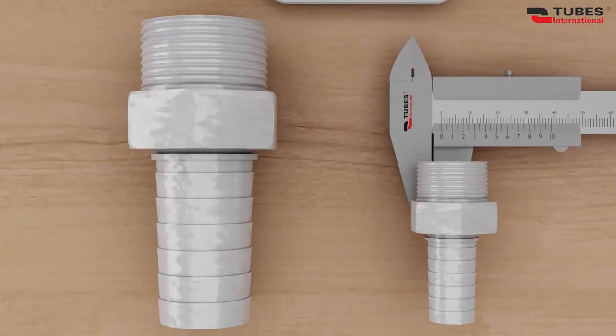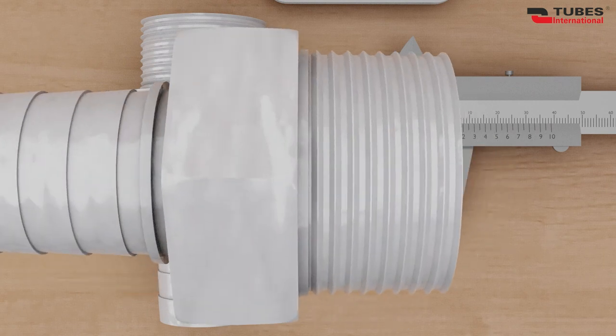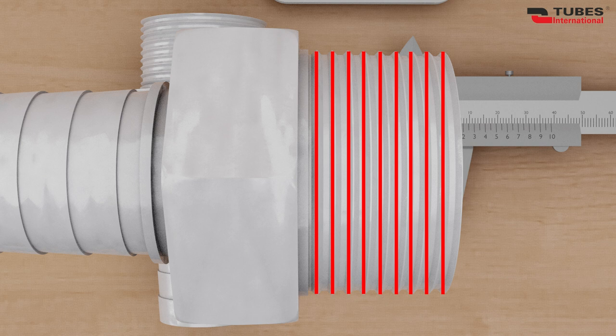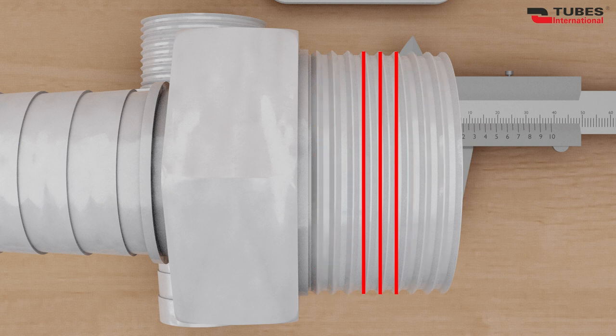So how do we measure a thread? Let's start by measuring the diameter. For a cylindrical thread, we can measure it anywhere, as the diameter remains constant. Taper threads are different. Here, we'd measure the diameter around the fourth or fifth turn.